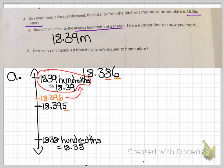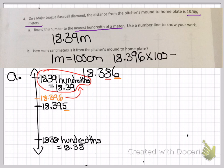Your answer for part A is 18.39 meters. For part B, one meter equals 100 centimeters, so you set up your equation using multiplication: 18 and 386 thousandths multiplied by 100 equals 1,839 and 6 tenths centimeters.